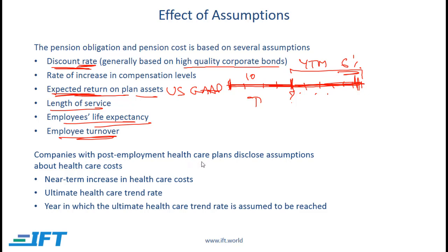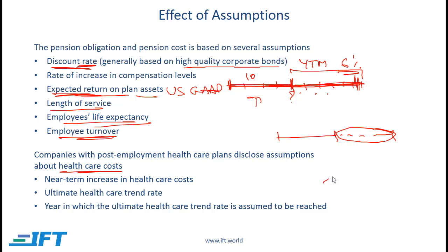Companies with post-employment health care plans disclose assumptions about health care costs. If a company says that after employees retire they will continue to receive health care benefits, then the value of that benefit depends on the cost of health care. Companies often assume that health care costs will rise at a certain rate — for example, a company might say health care costs will rise at 10% for the first five years.